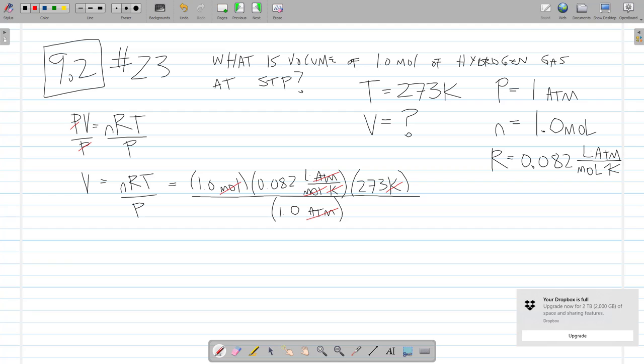So now plug these numbers into the calculator. We get 1 times 0.082 times 273 divided by 1, and the volume equals 22.386 liters.